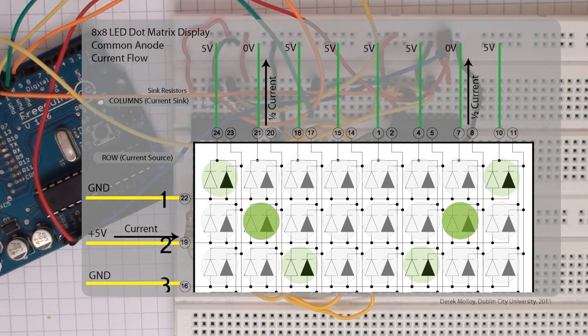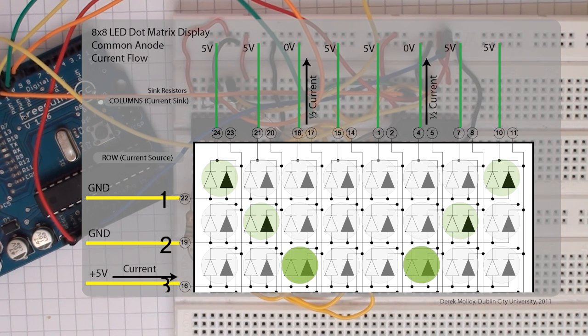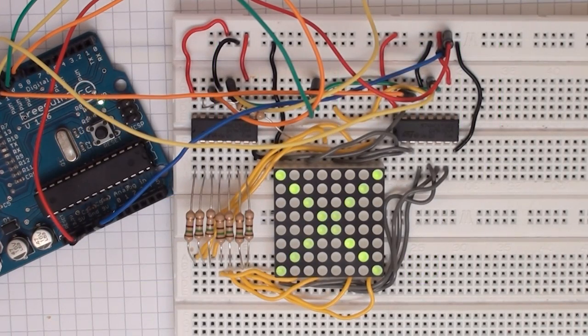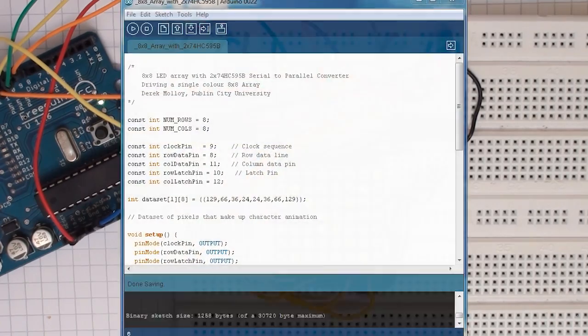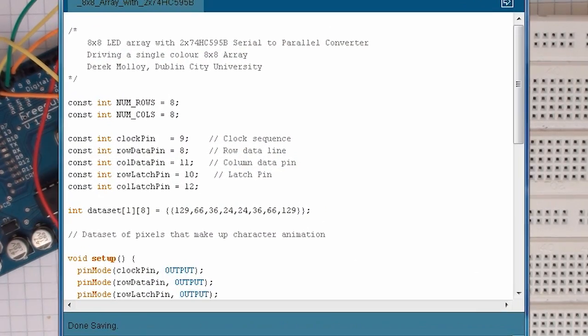So the full current, whatever that is to be, comes in on the row and sinks to each of the columns. So here is my full configuration. You do notice there is a tiny flicker, but that is only because of the way it has been captured on the camera.